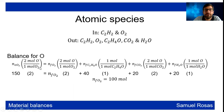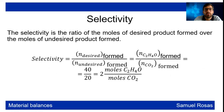An oxygen balance can also be done: oxygen enters from O₂ and exits in O₂, C₂H₄O, CO₂, and H₂O, giving 100 moles of O₂ remaining. Finally, we can obtain the selectivity, which is the ratio of moles of desired product formed over moles of undesired product formed. Since we have 40 moles of C₂H₄O and 20 moles of CO₂, the selectivity is 2 moles of C₂H₄O per mole of CO₂.